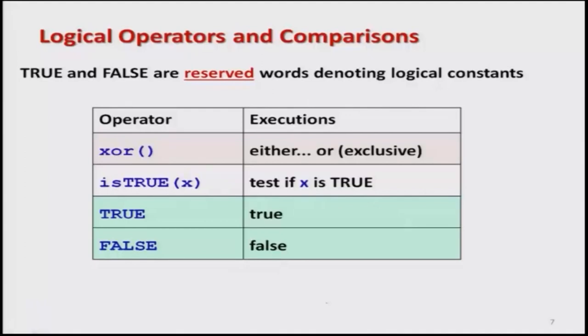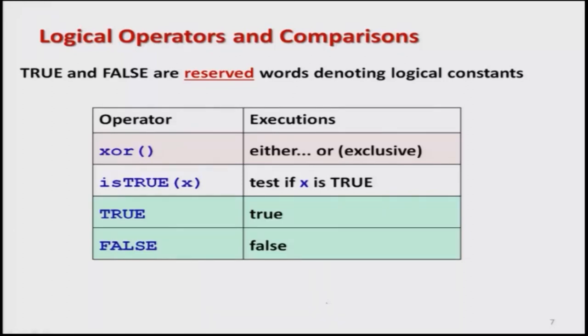Now let us look at some other operators for comparing statements with respect to TRUE and FALSE. To check the truthfulness of more than one statement, we use XOR(), writing the statements inside the bracket. There is also isTRUE(), which tests if a variable X is TRUE. TRUE and FALSE written in capitals indicate whether a statement is true or false respectively.